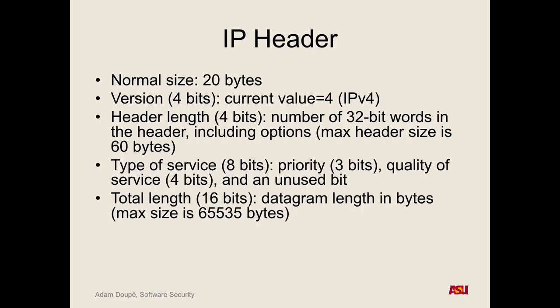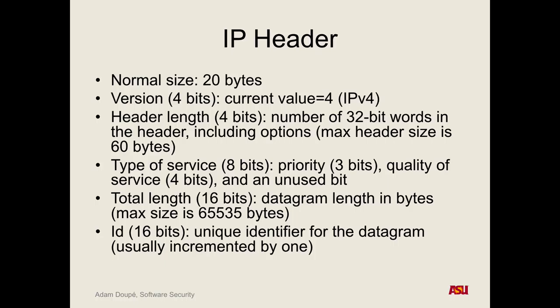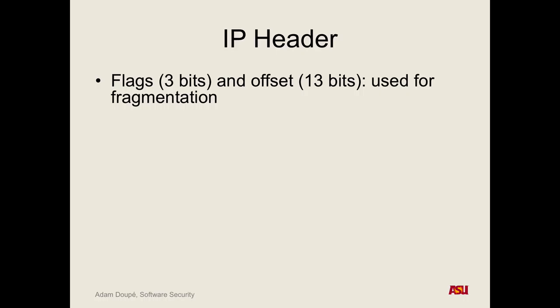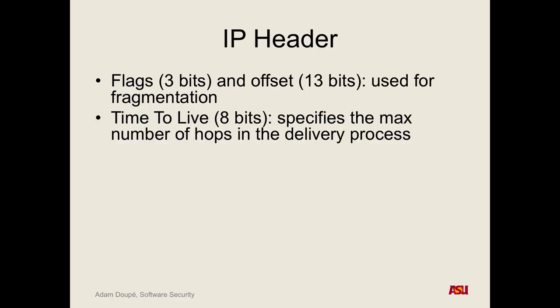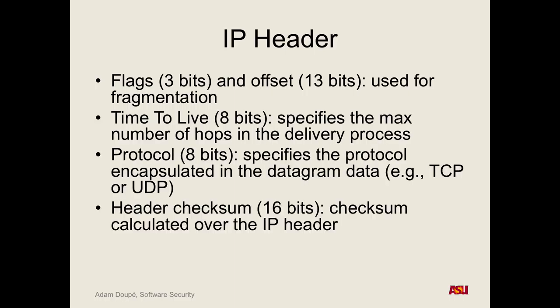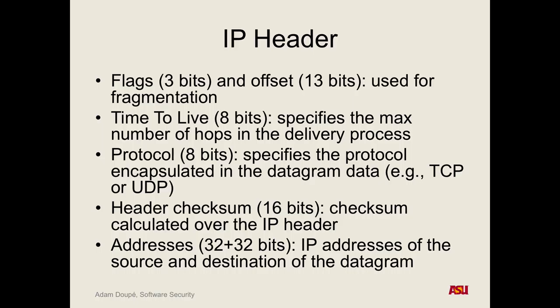The total length gives the total length of the datagram packet. An ID is the unique identifier for the datagram — we can send a packet with at most 65,535 bytes in one IP packet. Then we have flags and offset, time to live, protocol, checksum, and finally the addresses.